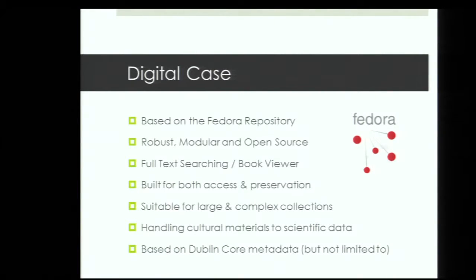DigitalCase is based on Fedora repository, which is robust, modular, and an open source platform — really a best-of-breed when it comes to institutional repositories. It allows full text searching, and we even have book viewers where you can recreate a digitized book using a text encoding framework. Fedora is built for both access and preservation, suitable for large and complex collections, equally good at handling cultural materials or scientific data. It's based on Dublin Core metadata standards, but not limited to that — any metadata standard we want to apply, we can.